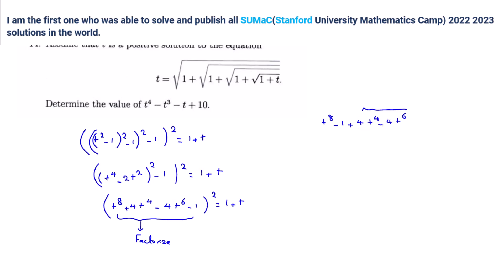Difference of two squares — yes, you can do that. Also, what terms are common in these two terms? 4t to the 4. Yes. So it would be 1 minus t squared. Then here also for this one you can factor because it is t⁴ minus 1, t⁴ plus 1. Then you can say t squared minus 1, t squared plus 1, and t to the 4 plus 1.